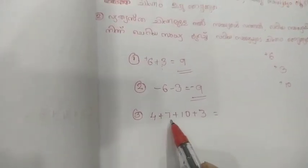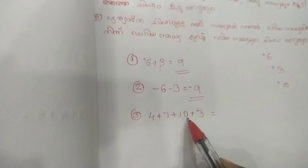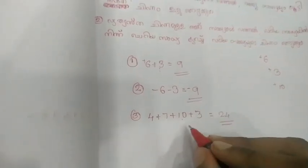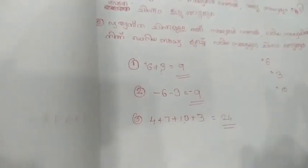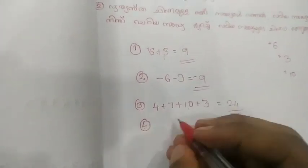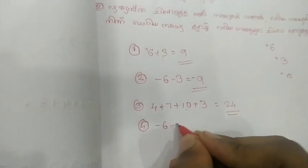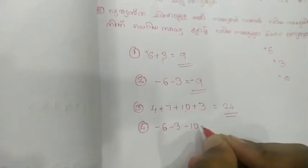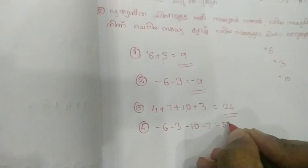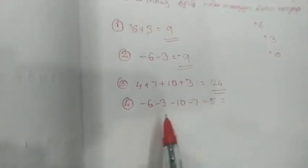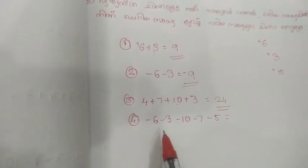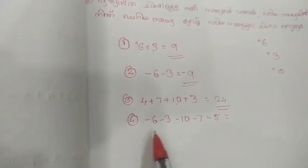4, 20, 10, 29. All the sign is plus. This is the plus. I will repeat the question. Minus 6, minus 3, minus 10, minus 10. All the sign is minus.